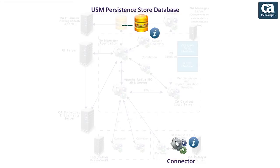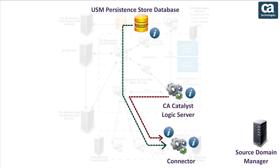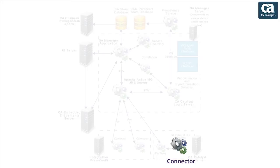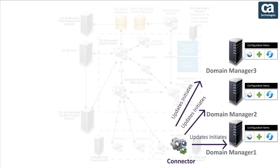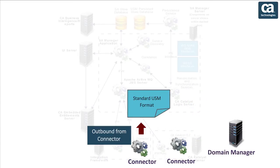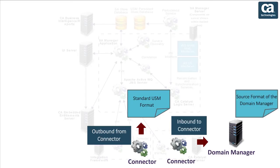Inbound to connector operations use records in the CA Catalyst persistence store and the CA Catalyst synchronizer to create, update, or delete items in the source domain manager. The inbound operations enable domain manager synchronization with changes that CI reconciliation, CI creation, and CI updates initiate in other domain managers. Outbound data is transformed into standard USM format, and inbound data is transformed into the source format of the domain manager.